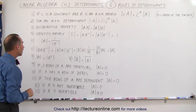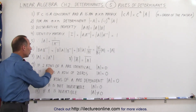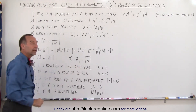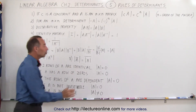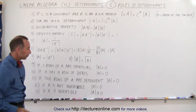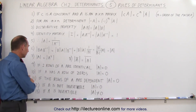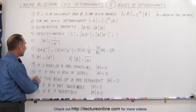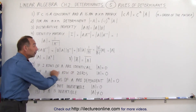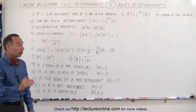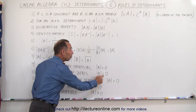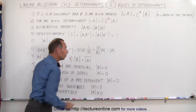The ninth rule says that if two rows of matrix A are identical, then the determinant of that matrix will be equal to zero. Rule ten says that if matrix A has a row of nothing but zeros, then the determinant of that matrix will also equal zero.